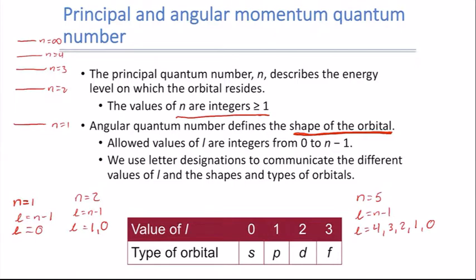With the angular quantum number, we designate it by a letter rather than just a number. A value of L=0 is called an s orbital; L=1 is a p orbital; L=2 is a d orbital; L=3 is an f orbital; L=4 is a g orbital; L=5 is an h orbital — and in theory this continues on in perpetuity.